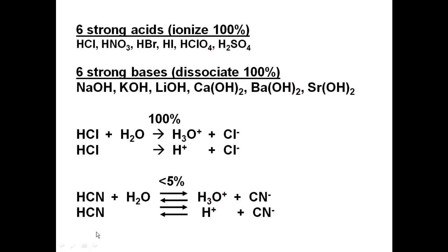There are six strong acids that ionize 100%. HCl, HNO3, HBr, HI, HClO4, and H2SO4. You need to memorize these as the strong ones. All the other acids are weak ones, since they ionize far less than 100%.